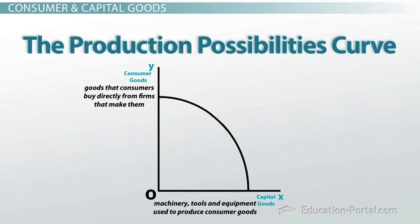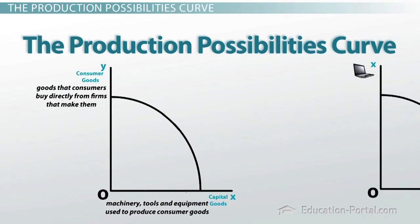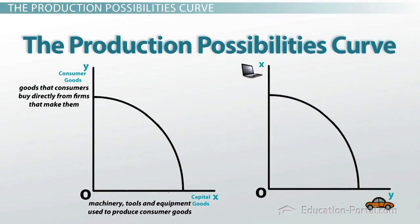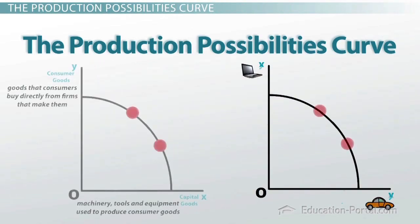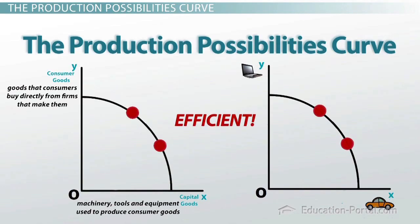In any economy, investments into capital goods will do more to increase economic growth than investments into consumer goods will. For both of these types of curves, though, every point along the curve is efficient, meaning this combination of producing two goods is at our capacity — we're producing the most that we can with the least amount of costs.